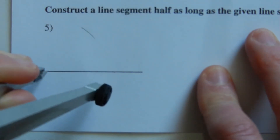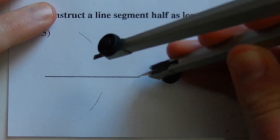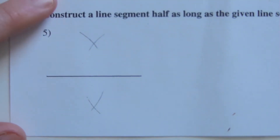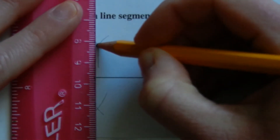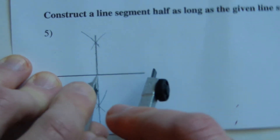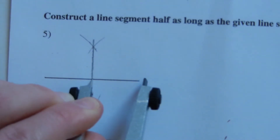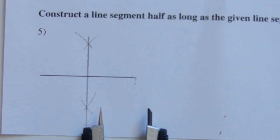We make a mark above and then spin the compass down to make a mark below. Without changing the compass length, we go from the other endpoint, draw up to make a mark, and draw down to make another mark. Where those two marks intersect, those points become the endpoints of the bisector, and we draw a line connecting those intersections. Then we place our compass on that midpoint and extend it to the edge of the original line — this is our new half-length measurement.